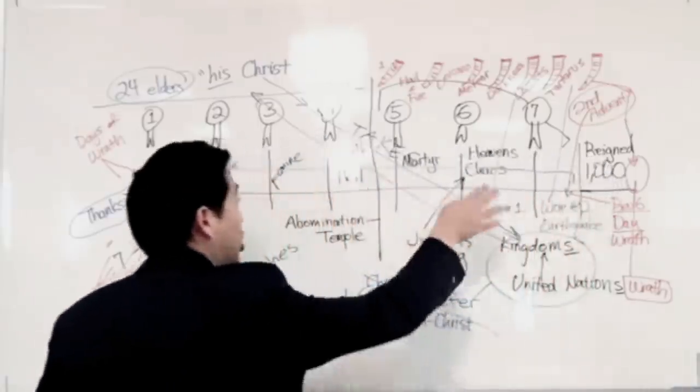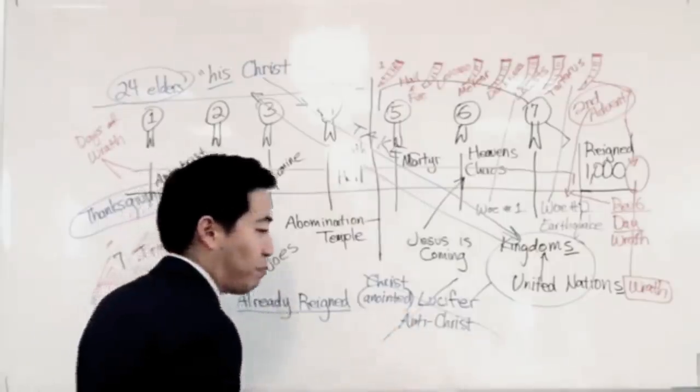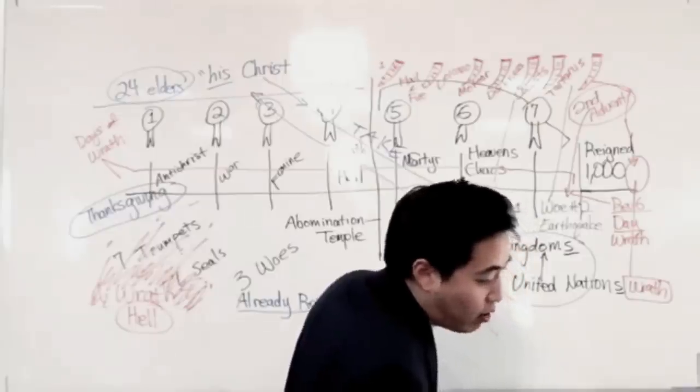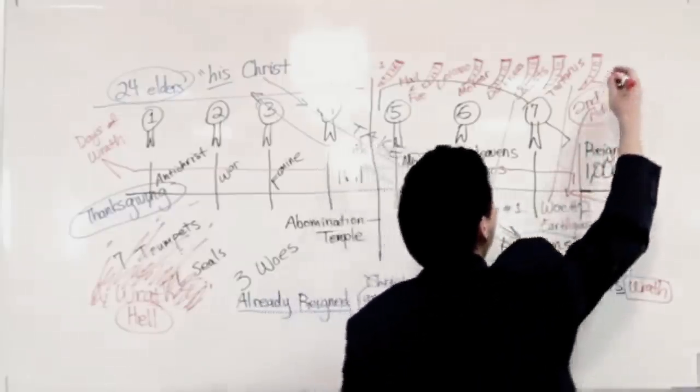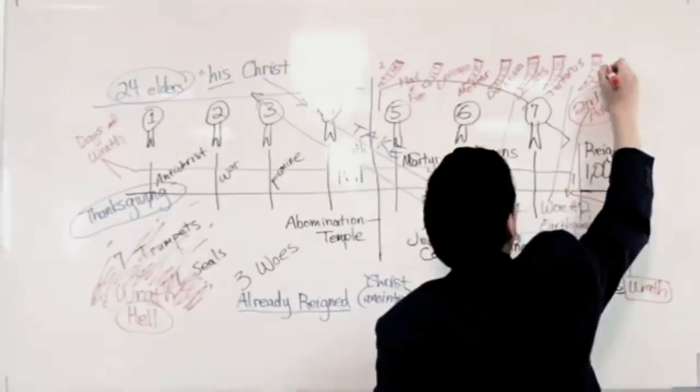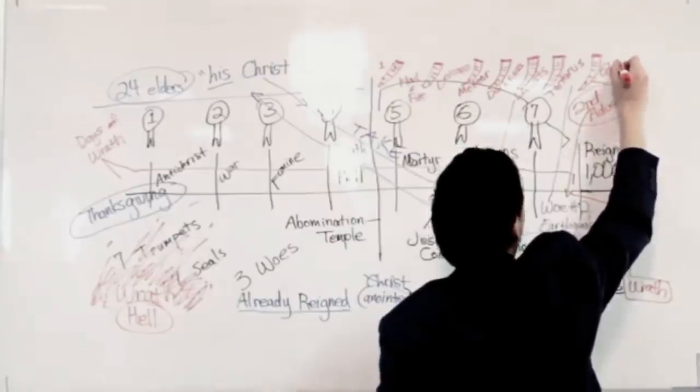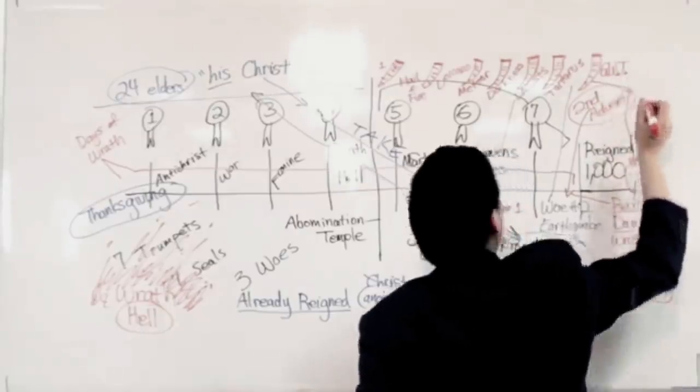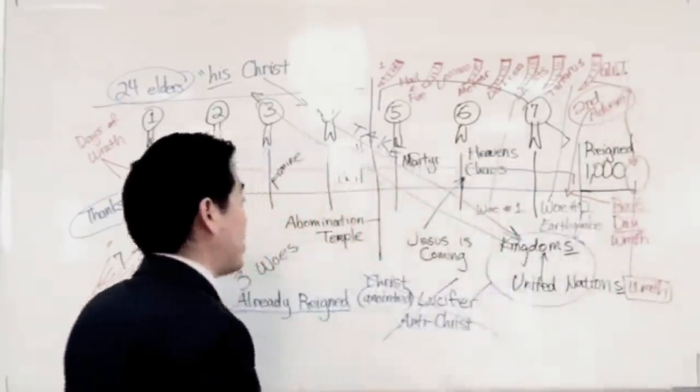So notice there's a time jump here at the seventh trumpet. From the seventh trumpet we see God's, the end of the millennium and the great white throne judgment. So let's call it GWT. Great white throne judgment when his seventh trumpet sounds out.